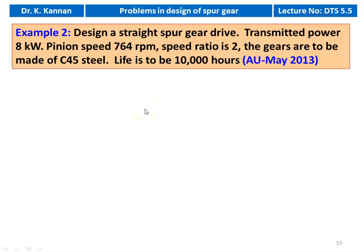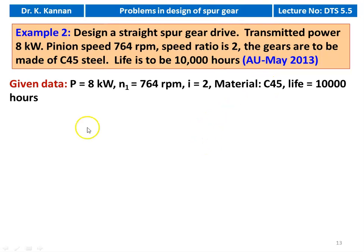Example number 2, from the May 2013 question paper: Design a straight spur gear drive. Transmitted power is 8 kW, pinion speed is 764 RPM, speed ratio is 2, gears made of C45 steel, and life is 10,000 hours. Given data: P = 8 kW, N1 = 764 RPM, i = 2, material C45, life = 10,000 hours.